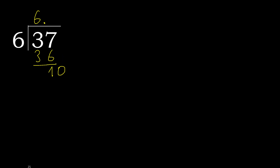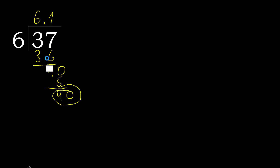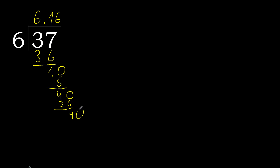10. 6 multiplied by 2 is greater. 6 multiplied by 1 is 6. Subtract, complete. Always complete with 0. Point is here. 40. 6 multiplied by 6 is 36. Subtract, complete.